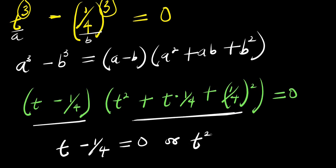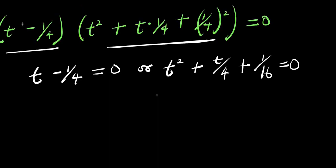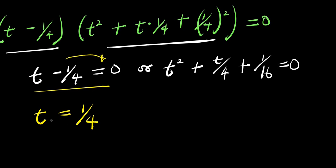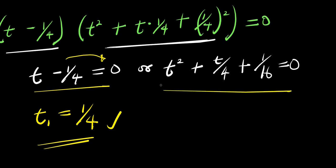I have t minus 1 over 4 equals 0, which gives t equals 1 over 4 by moving this over here. So this is my t₁ — my first solution. Now for the quadratic factor: t squared plus t times 1 over 4, that is t over 4, plus 1 over 4 squared, which is 1 over 16, and this equals 0.